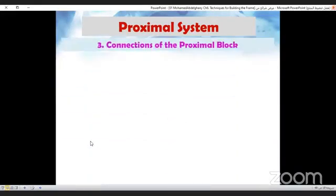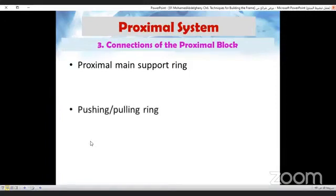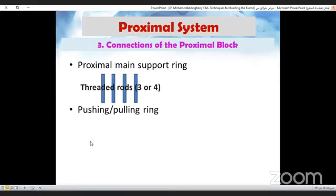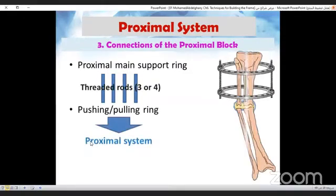Now we come to the connections of the proximal block. If we connect the proximal main support ring and the pushing pulling ring with three or four threaded rods, we now get the proximal system.